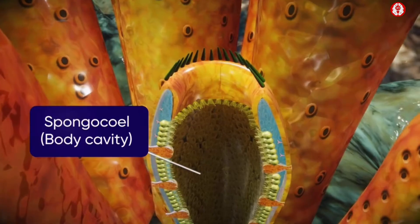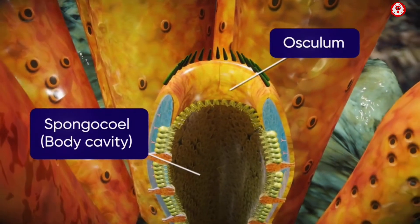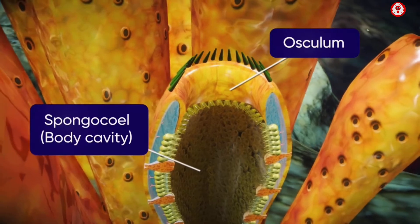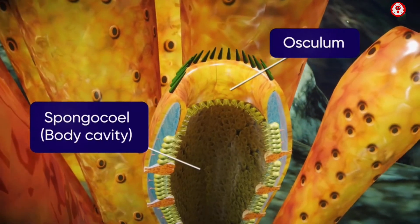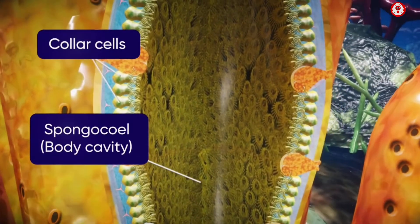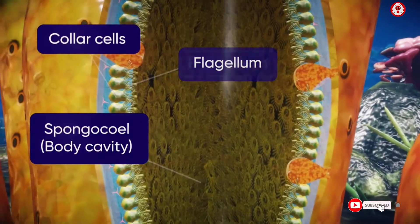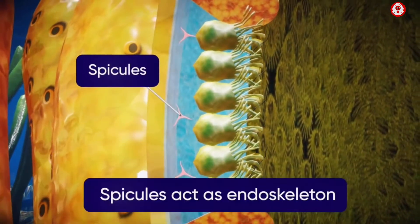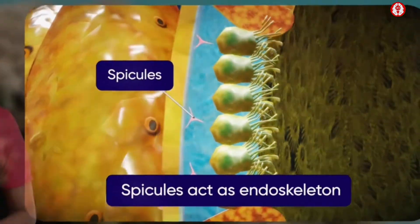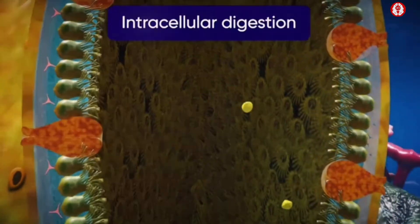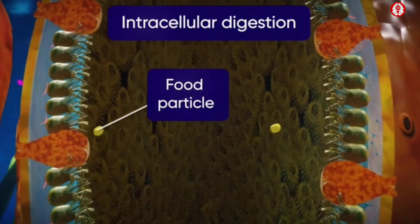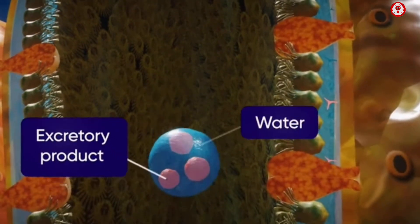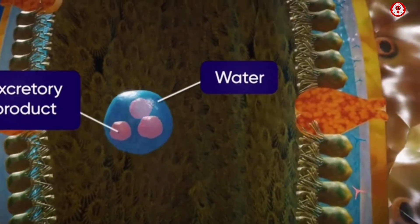The spongocoel opens to the outside by a single large aperture called the osculum, located at the apex of the free end of the body. The spongocoel is lined by flagellated collar cells. The skeleton of the body is formed by spicules, which act as the endoskeleton.